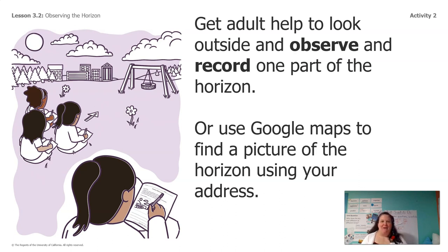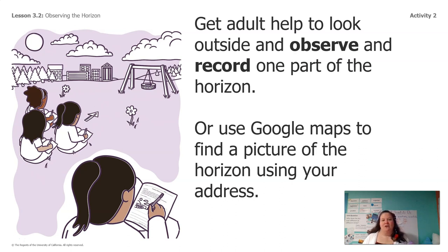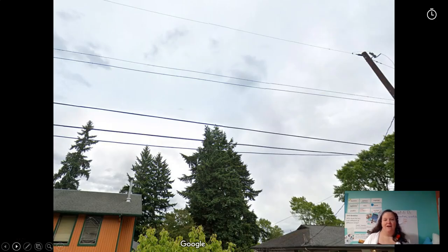Let me talk to you about how you guys are going to be a part of making observations about the horizon. You have some choices. One is you can get an adult's help to go outside and make some observations about the horizon just like I did — you go to a spot, look, decide what's important about the horizon, and draw it. If you can't get outside, you can use Google Maps to find a picture of your horizon using your address. I did that and found a picture that looks a lot like one I went out and found.